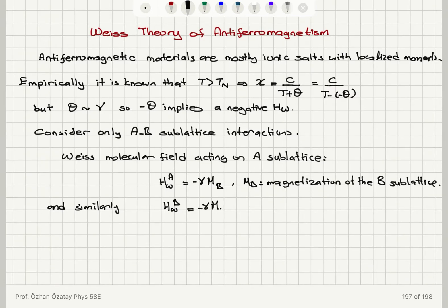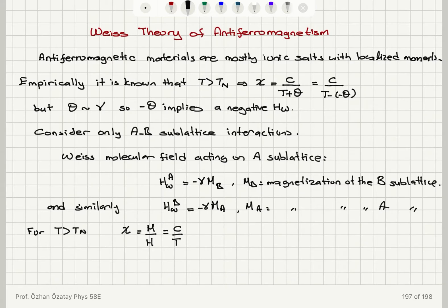For temperature greater than the Néel temperature, the susceptibility is the net magnetization divided by the magnetic field H, and this varies as C over T. So I can write the magnetization for each sub-lattice as H times C over T, because each sub-lattice has turned into a paramagnet. Writing this for sub-lattice A, H is the net field acting on A.